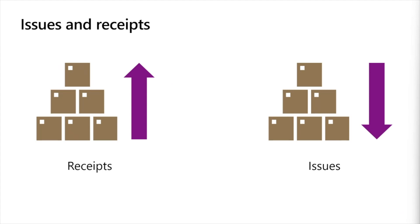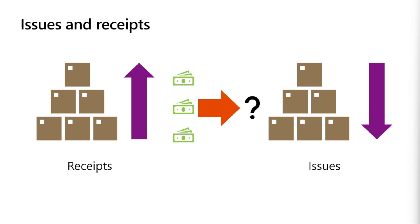In costing terminology, it's important to understand issues and receipts. Every inventory transaction is classified as one or the other. A receipt is any transaction that increases on-hand inventory; an issue is any transaction that decreases it. The cost of receipts — our inflow cost — is typically predefined, such as purchase prices. The cost of issue transactions is what we need to answer with our costing configuration: how do we assign the cost of receipts to determine the cost of our various issue transactions?